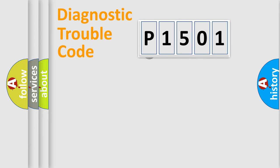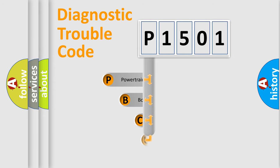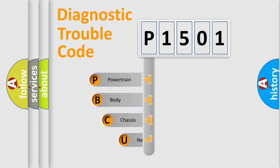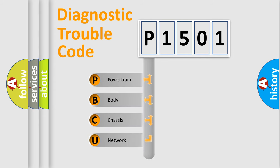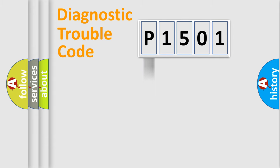First, let's look at the history of diagnostic fault code composition according to the OBD2 protocol, which is unified for all automakers since 2000. We divide the electric system of the automobile into four basic units: Powertrain, Body, Chassis, and Network. This distribution is defined in the first character of the code.